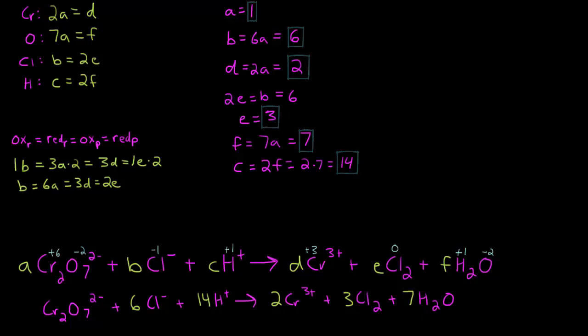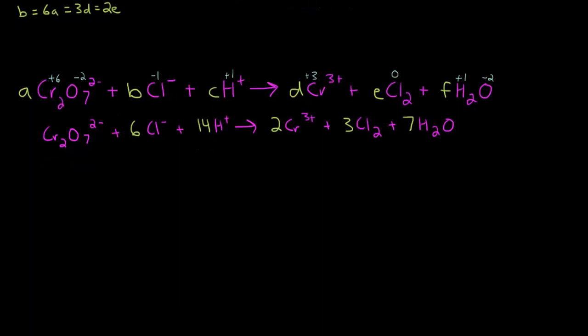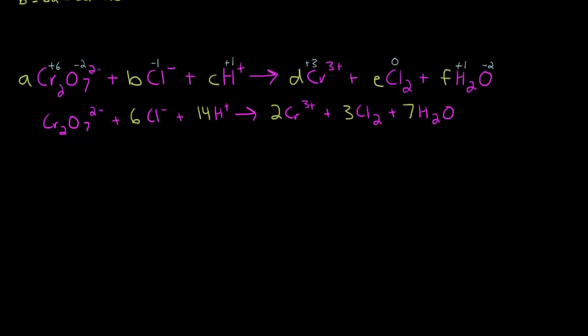Alright, so let's go ahead and scroll down a little bit more and we'll check and see if everything is balanced. So we'll start with chromium. We have 2 chromiums on the left and we have 2 chromiums on the right. For oxygen, we have 7 oxygen on the left equals 7 oxygen on the right.